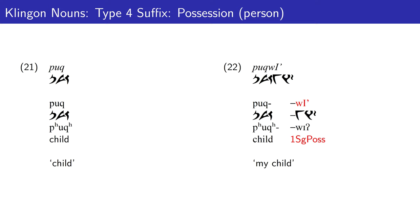If a speaker wishes to mark a noun as possessed by someone, we can use a type 4 suffix. Here we have a noun root referring to a person: 'poh', referring to a child. A child is a person, and so a special suffix for person must be used. The first person singular possessor suffix would mean 'my child'.